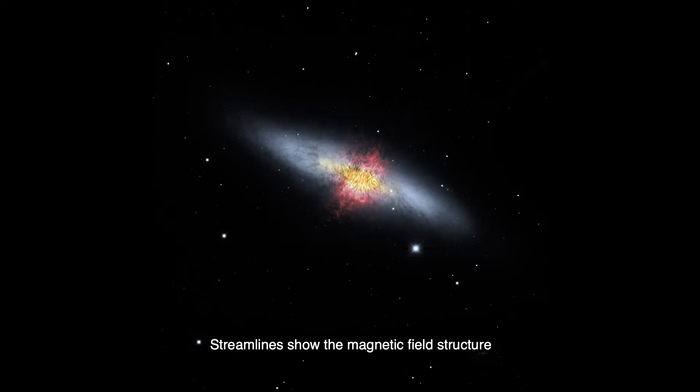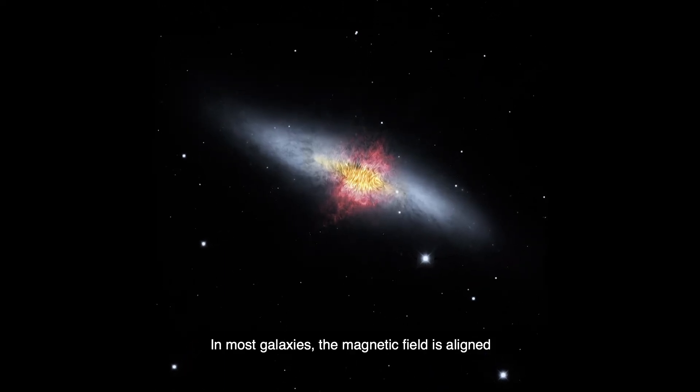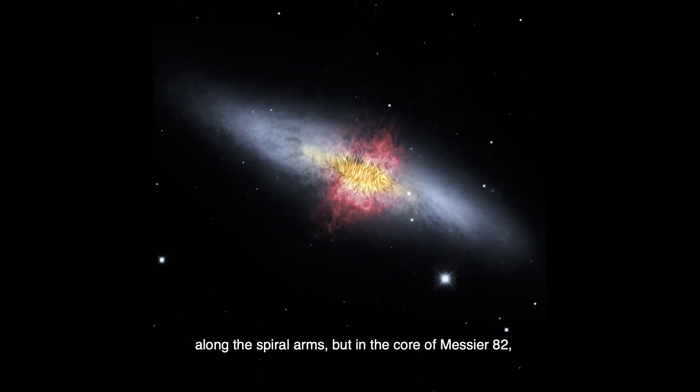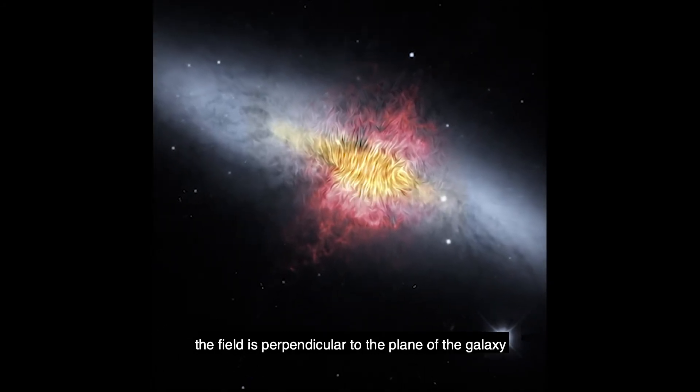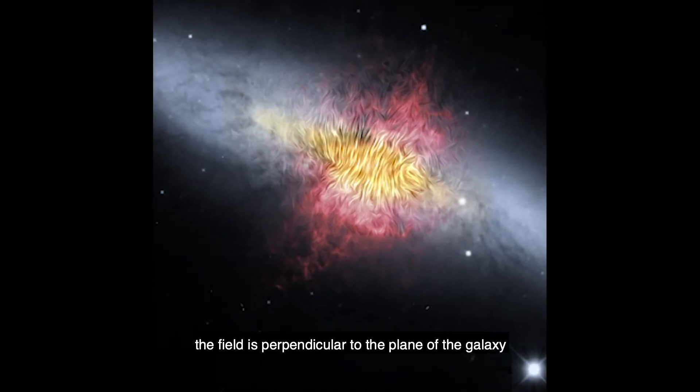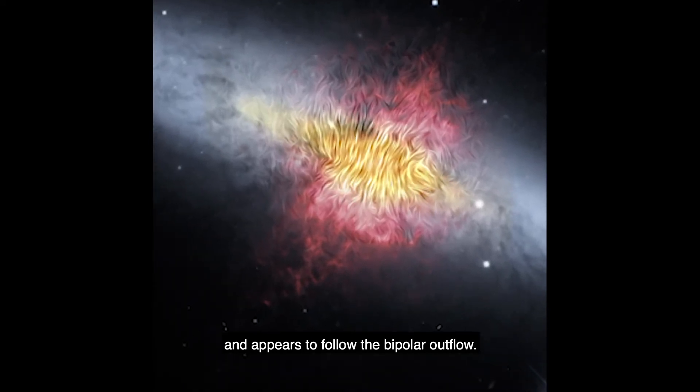Streamlines show the magnetic field structure detected by SOFIA. In most galaxies, the magnetic field is aligned along the spiral arms, but in the core of Messier 82, the field is perpendicular to the plane of the galaxy and appears to follow the bipolar outflow.